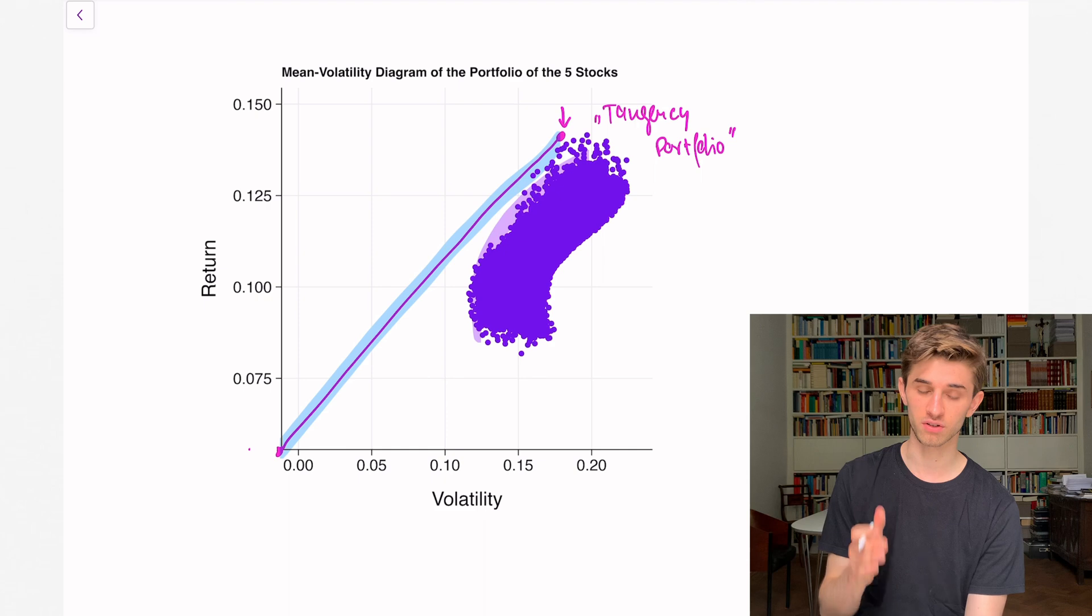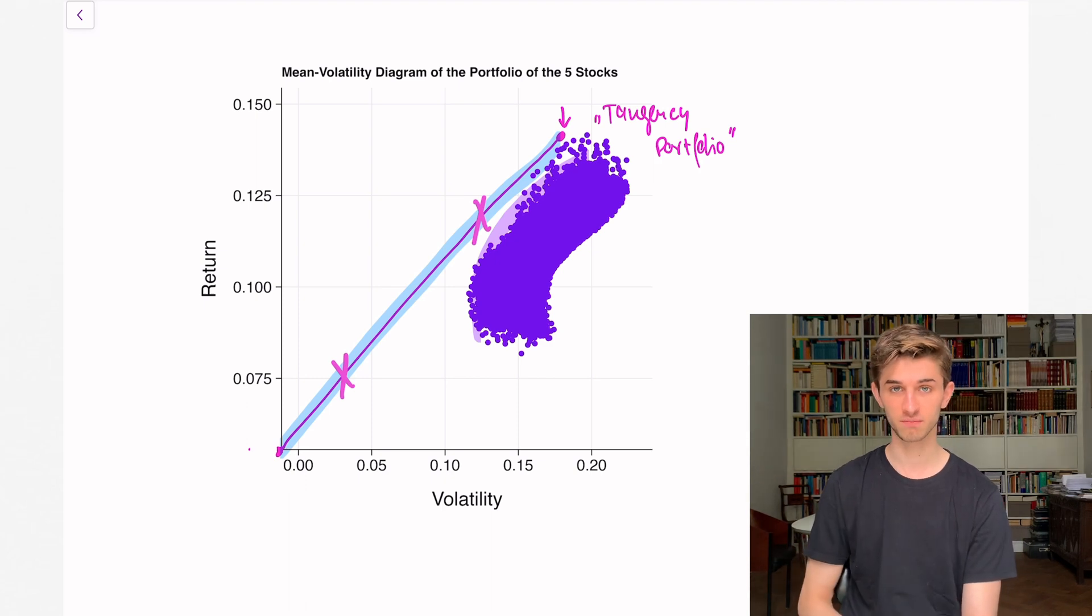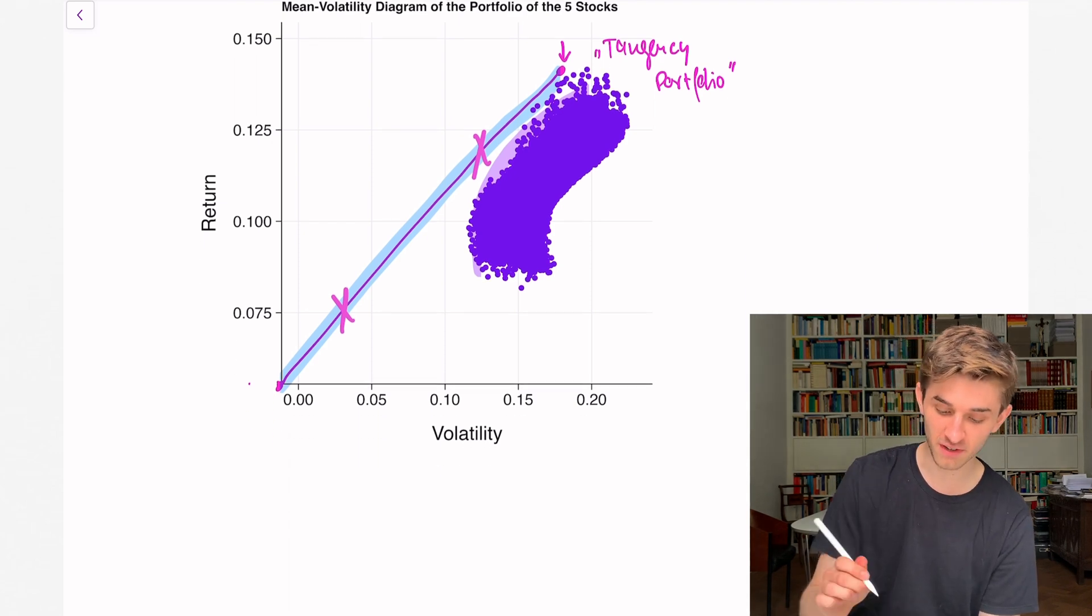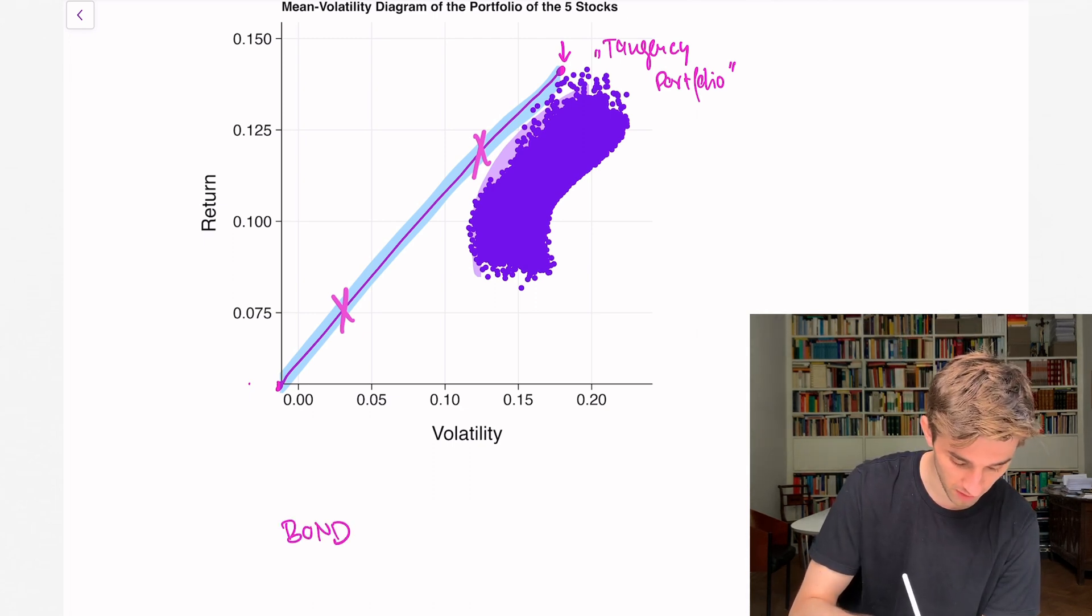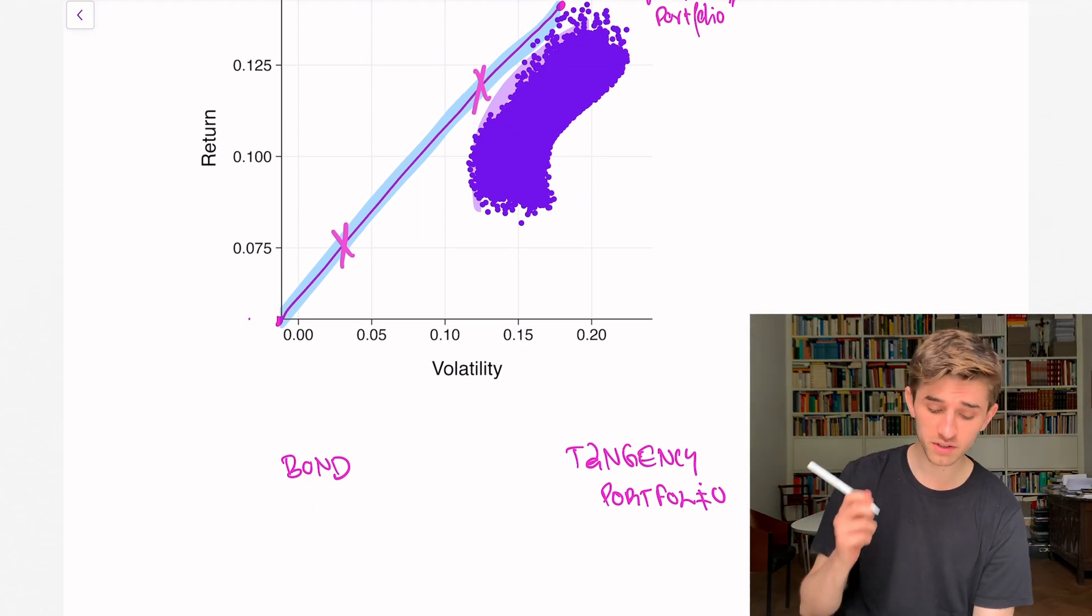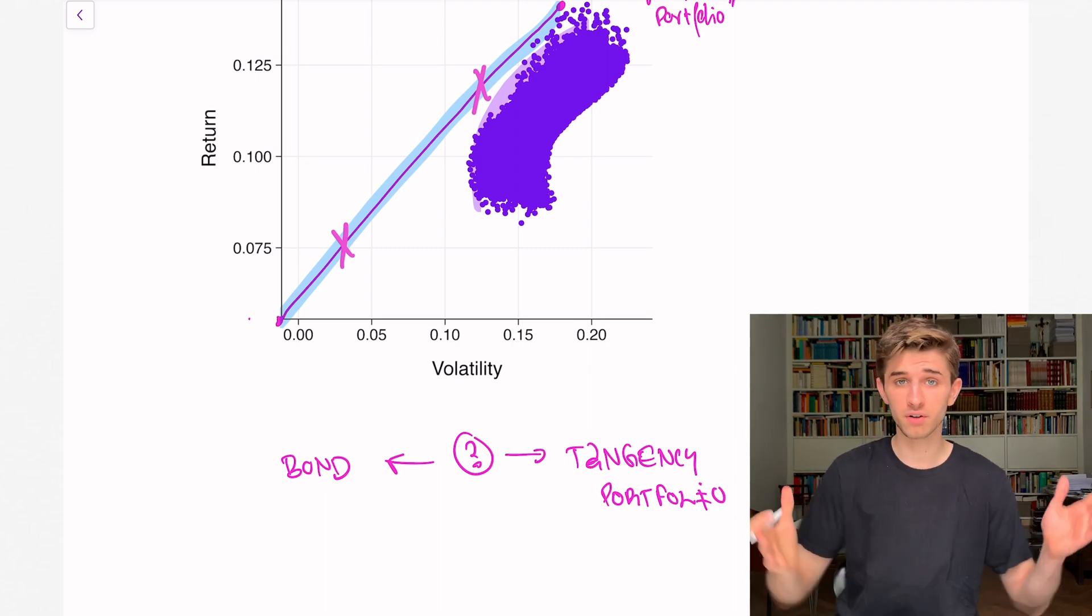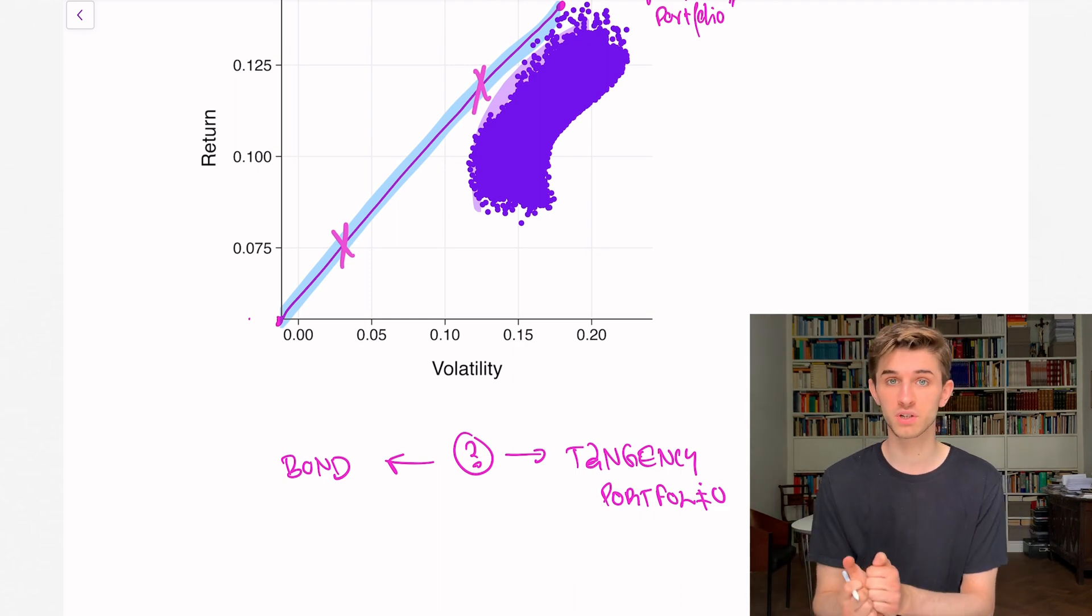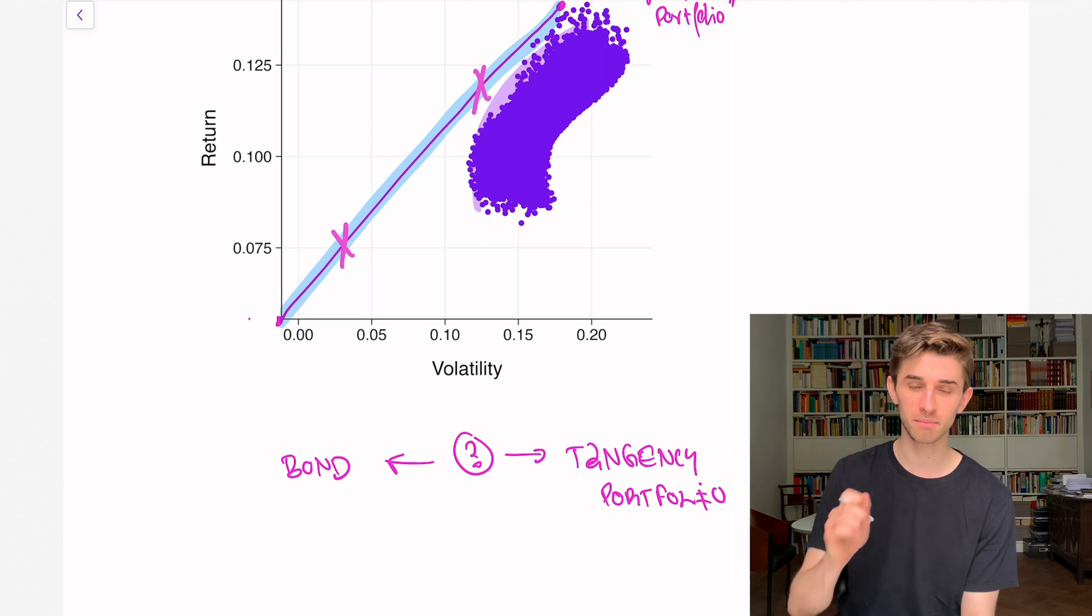Remember what we said about the efficient frontier. That's the portfolios the investors are looking at. Where you are at the efficient frontier depends on your level of risk aversion. This analysis is kind of magic because what does it tell us? It tells us the investment decision is actually very simple. We only need to consider two things: the bond and the tangency portfolio. And our only decision is how much of our money we allocate to the bond and how much to the tangency portfolio.